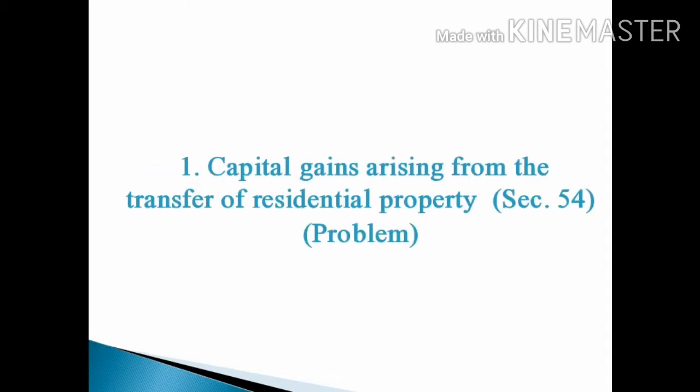In the previous lecture, we were discussing about the first head under Capital Gains Exempt from Tax, i.e., Capital Gains Arising from the Transfer of Residential Property, which comes under Section 54. And in this lecture, we are going to discuss a problem under that same head — Capital Gains Arising from the Transfer of Residential Property under Section 54.